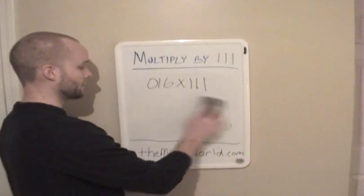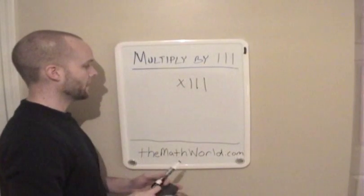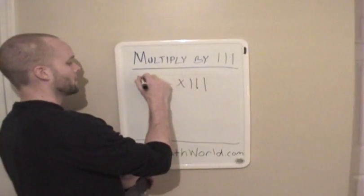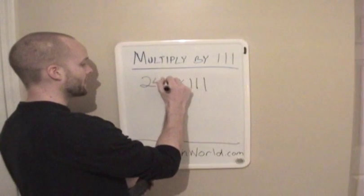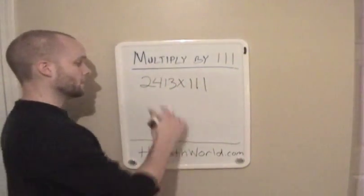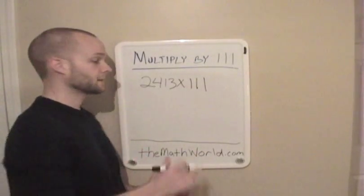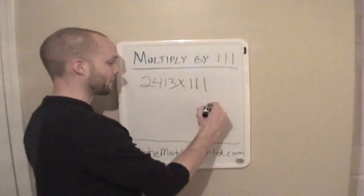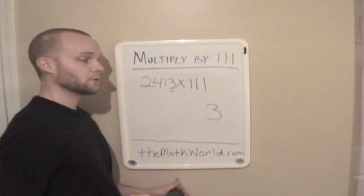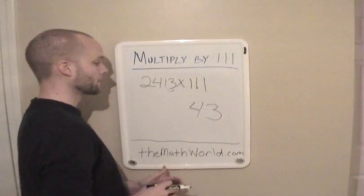It's a little easier if you have a three-digit number, so we'll actually look at a four-digit number so you can understand the process. Let's say 2413 times 111. The first thing you're going to do is write down the last number — in this case it's 3, so we write down 3. Then we're going to add the last two numbers, 3 and 1, which is 4. We write down 4.